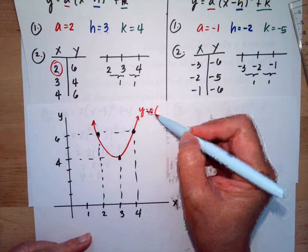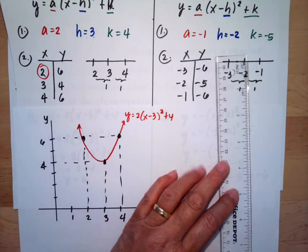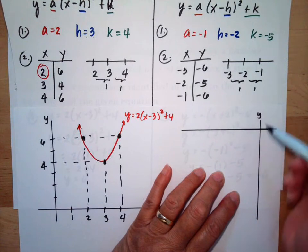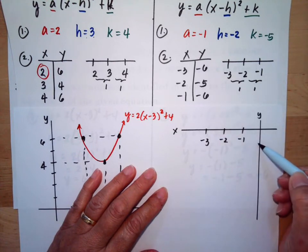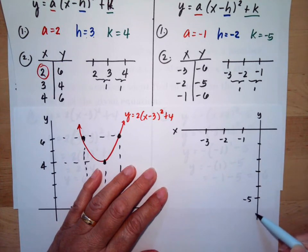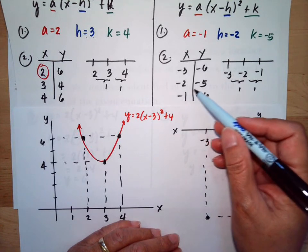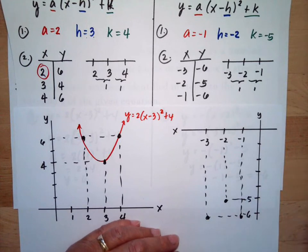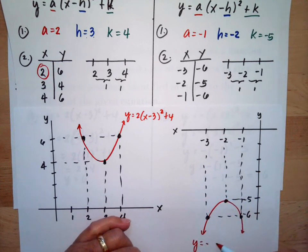For Example 2, we draw the t-chart with all negative coordinates. On the axes, we mark x at negative 1, negative 2, and negative 3, and y at negative 4, negative 5, and negative 6. When x = -3, y = -6; when x = -2, y = -5; when x = -1, y = -6. Connecting the dots gives the graph for y = -(x + 2)² - 5.